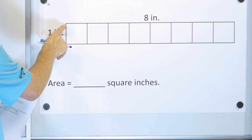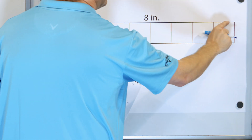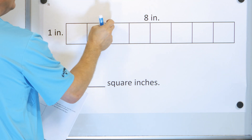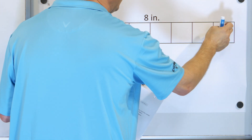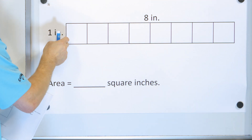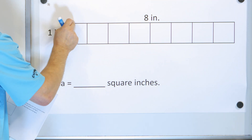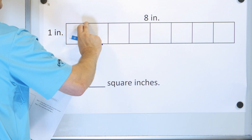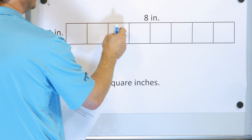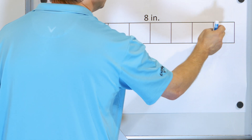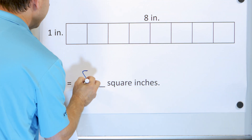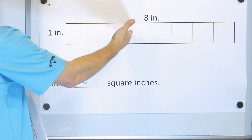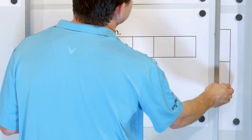What is the area of this object? It's one inch tall by eight inches wide. Because it's eight inches wide, we chop it into eight segments, and we have one inch tall. So each piece is a square inch — one inch by one inch. How many do I have? One, two, three, four, five, six, seven, eight square inches. To figure out the area, all you have to do is count squares.